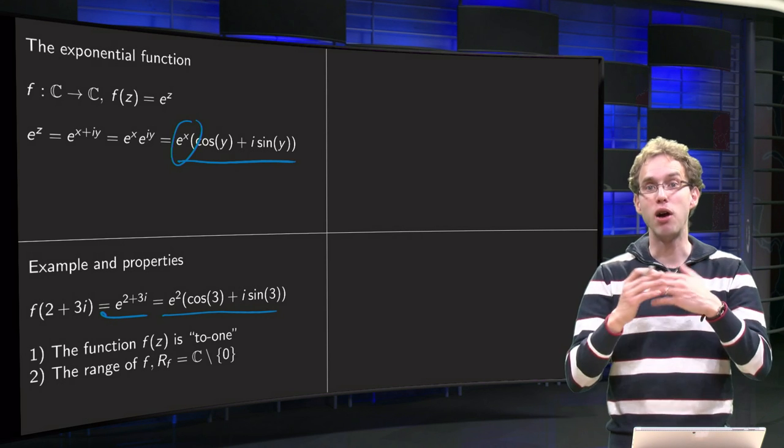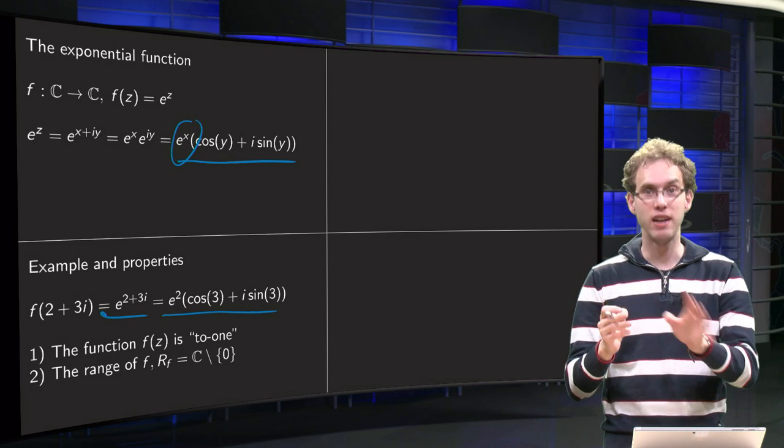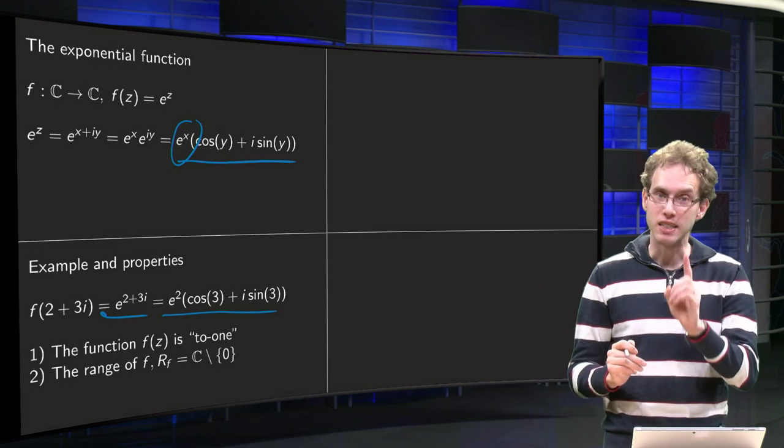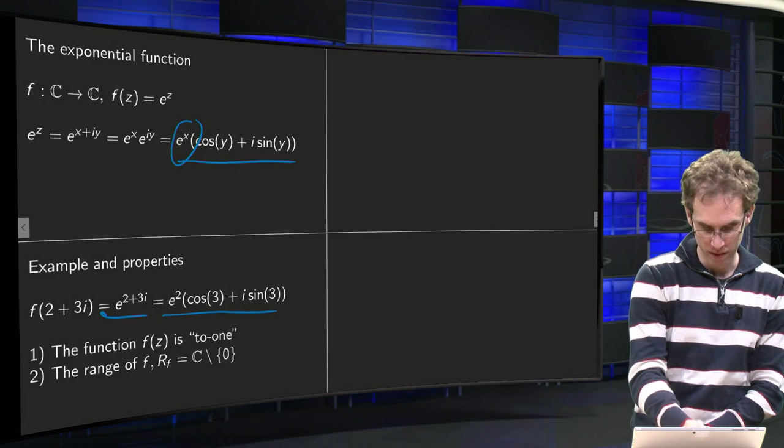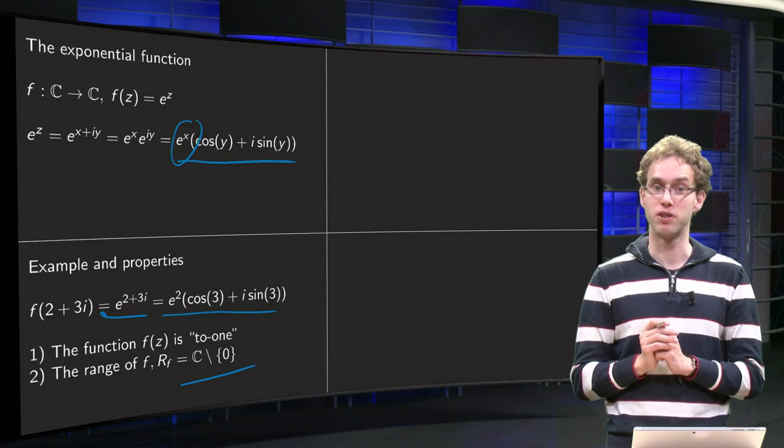So you can get any positive number except 0, so that means our outcomes will be any complex number, because you can get any norm, any argument except for 0. So the range of f is the set of all numbers in C except for 0.